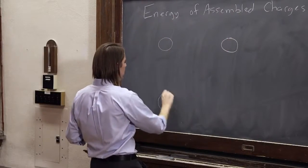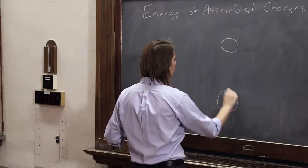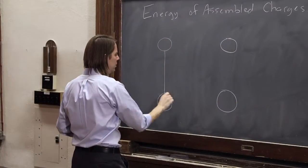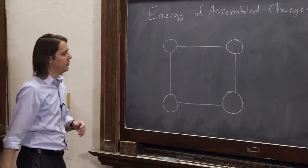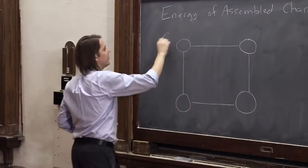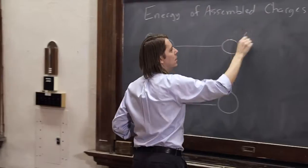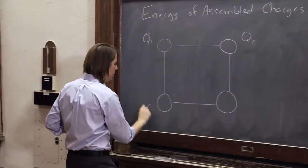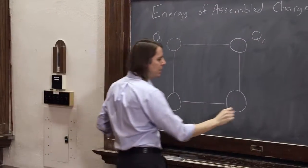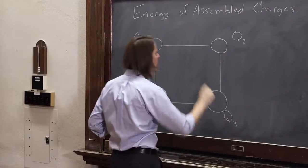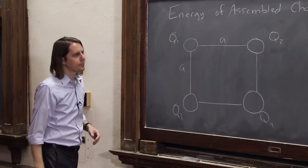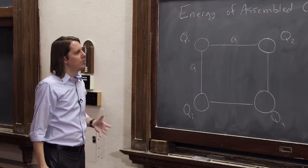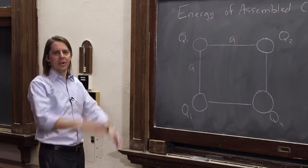So what we're going to work with is four charges on a square. One, two, three, four. Just pretend that's a square. One, two, three. It's a perfect square. I don't want to hear about it. It's a perfect square. And this is Q1, Q2, Q3, and Q4. And the sides of this square are A. And we want to know, what energy did it take to bring all these charges together?